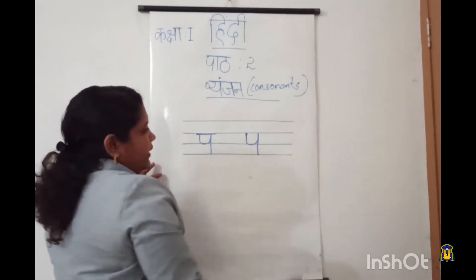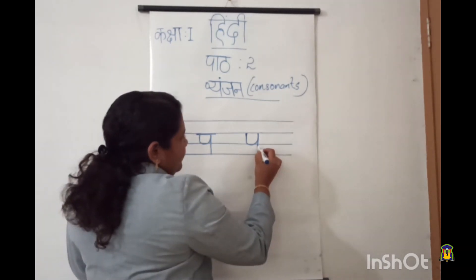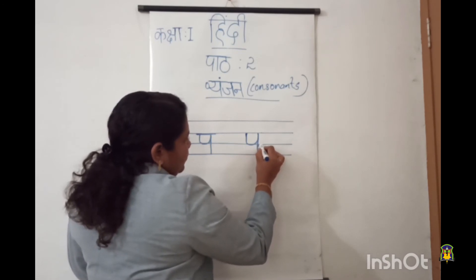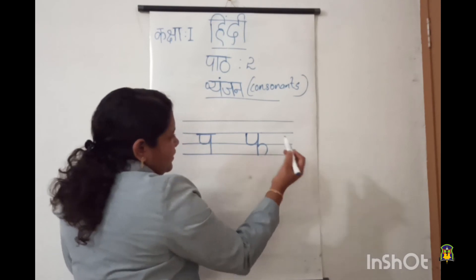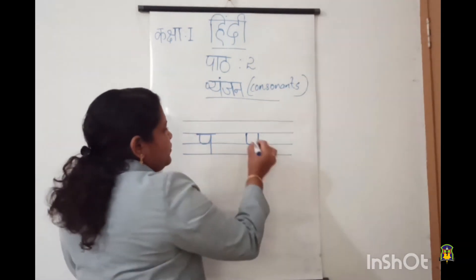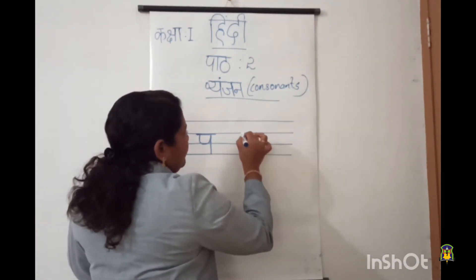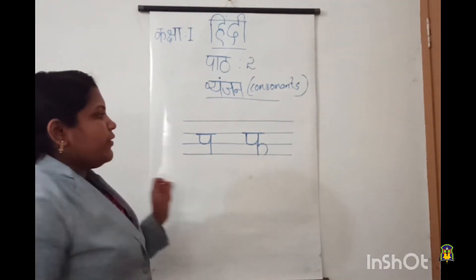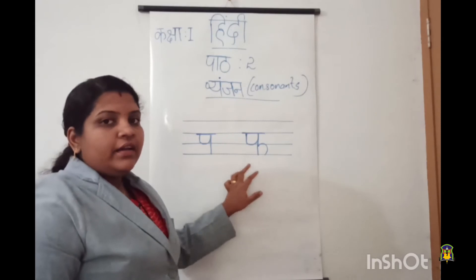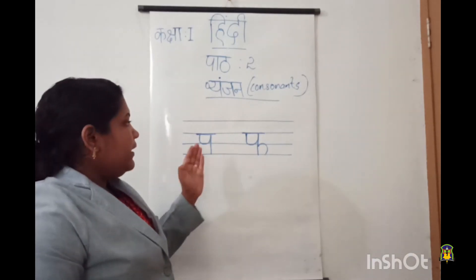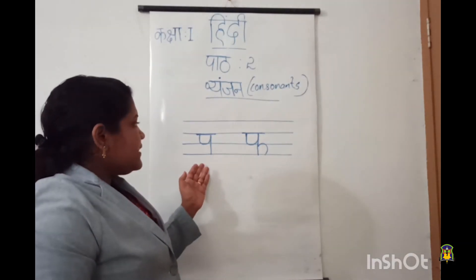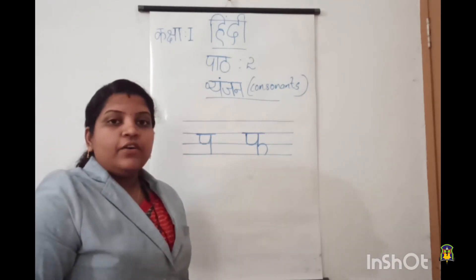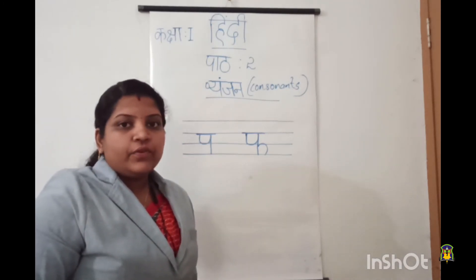Then from here draw a standing line like this. Then one more thing — we will draw another curve from the third line to the fourth line like this. Then last, we will draw a sleeping line on the top of the second line. So that's the letter fa. Clear children — pa and fa. Pa say patang, patang means kite. Fa say fal, fal means fruits.